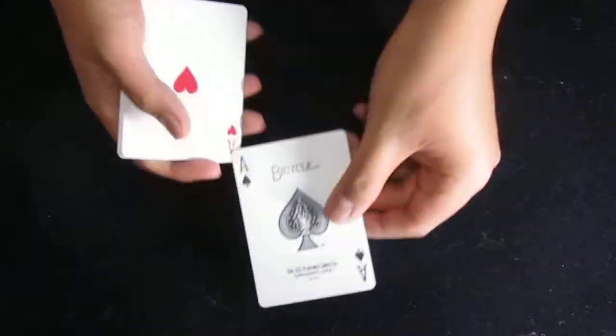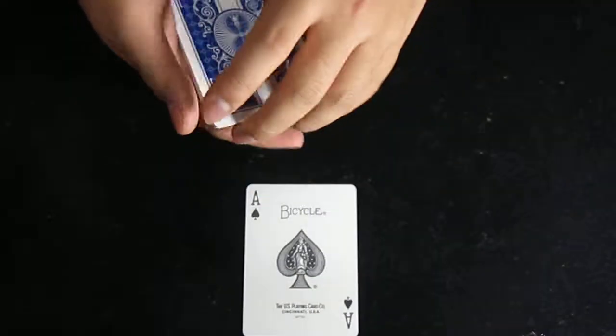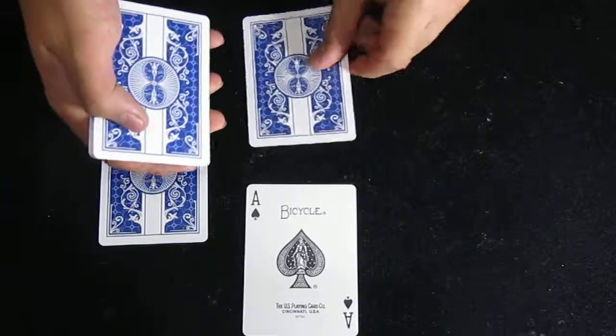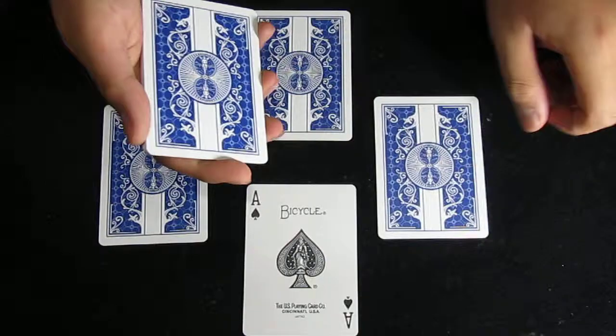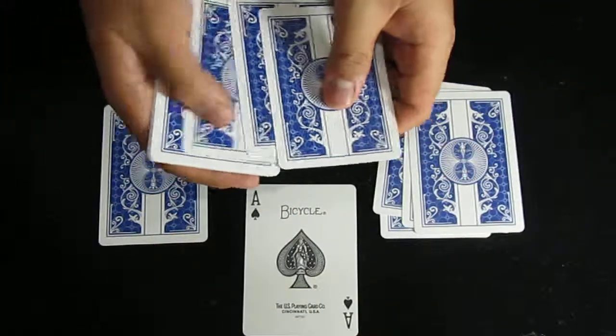First I'll place the ace of spades down here, and three other aces. I'll place them face down as well. Next I'll get three indifferent cards and place them on top of each ace.